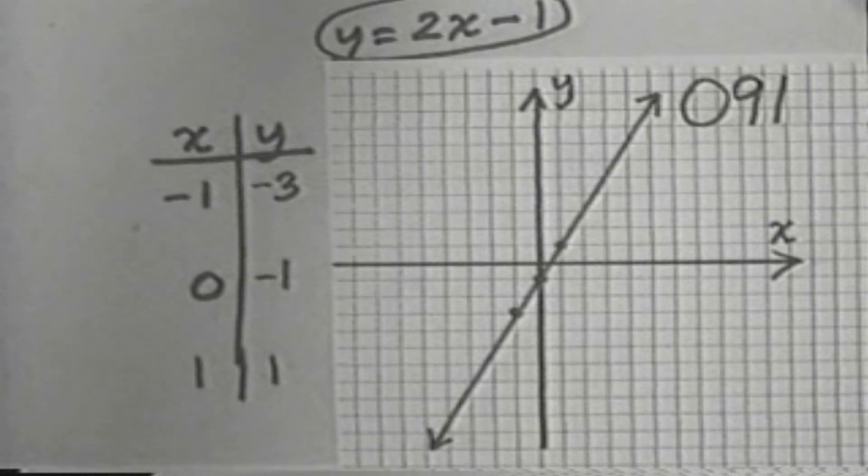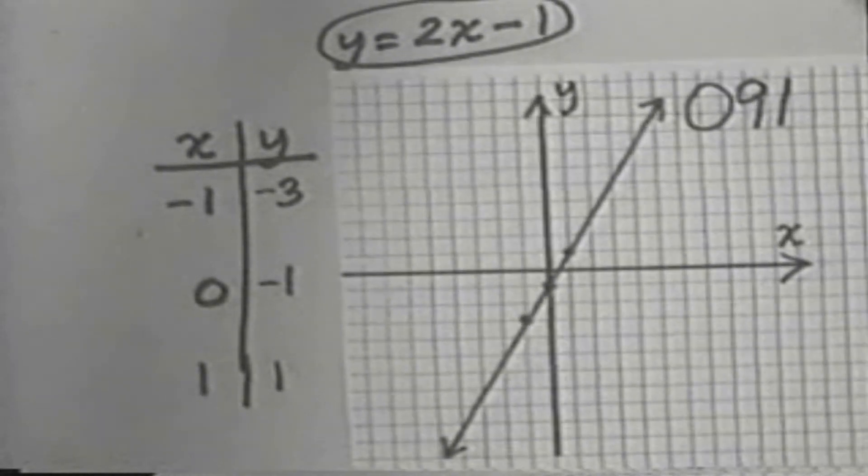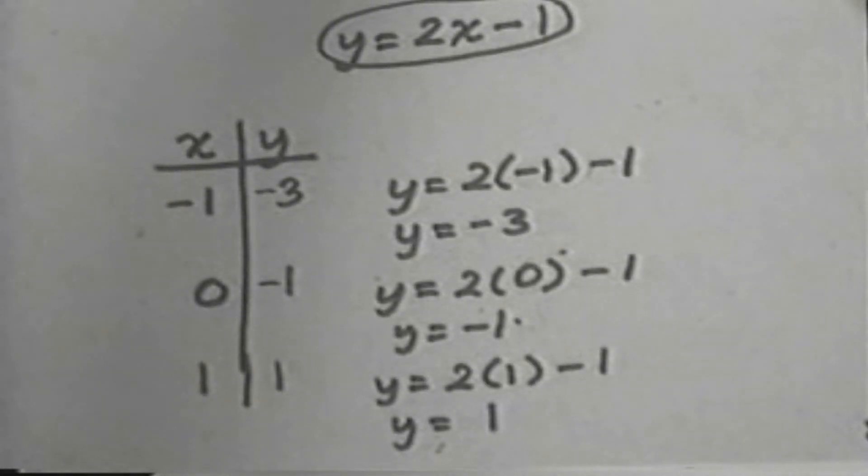For the other equation, which we must graph on the same coordinate system, so I'll set this aside and then bring it back when I get ready to graph the second equation. The second equation is 4x plus 2y equals negative 10.